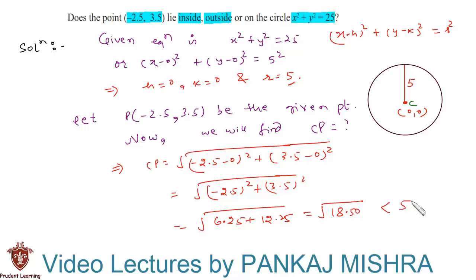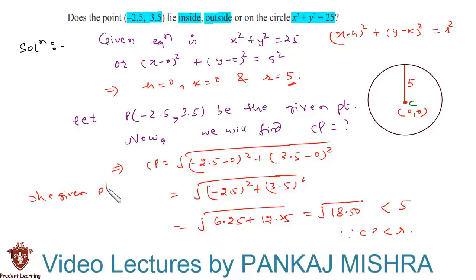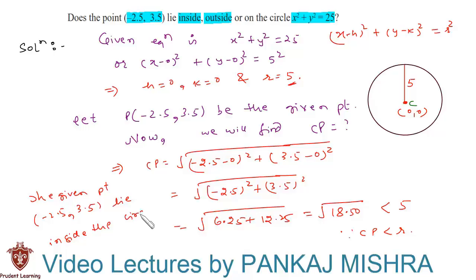We know that √18.50 is always less than 5, that is less than the radius of the circle. Since CP is less than the radius, the given point lies inside the circle. So our answer is: the point (-2.5, 3.5) lies inside the circle.